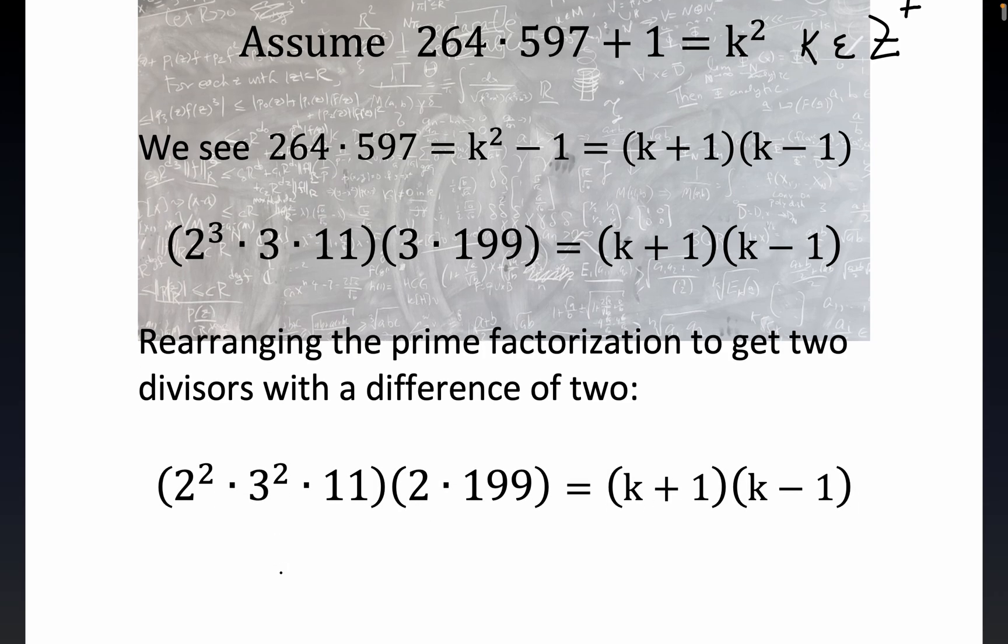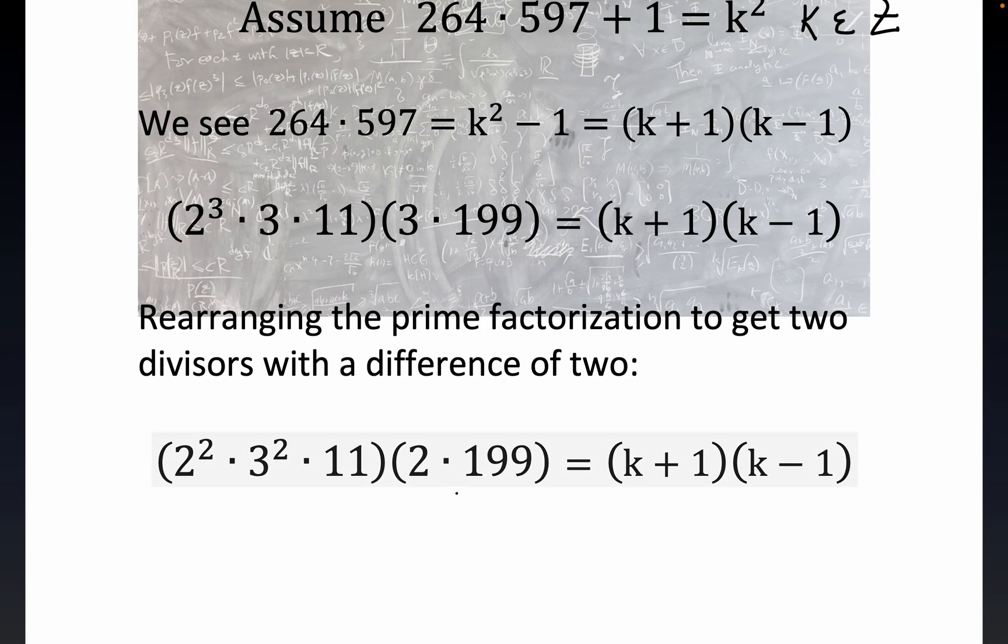So if you take a look at the multiplication right here, 2 times 199 is 398. That's just 2 less than 400. So 2 times 199 is 398. And over here, you get 396. And again folks, that's not too hard to verify. This number is 4 times 99, right? 4 times 99.